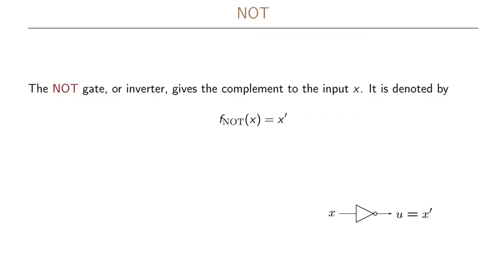Starting with defining the NOT gate, or the NOT boolean function. This is sometimes also called an inverter, though inverter is a little bit unfortunate name if you want to look at the mathematical properties of this function — it is often better to call it the complement. The NOT function gives us the complement of the input x, and we will denote this as x prime. Throughout the course we will use this prime to denote the complement of a function.